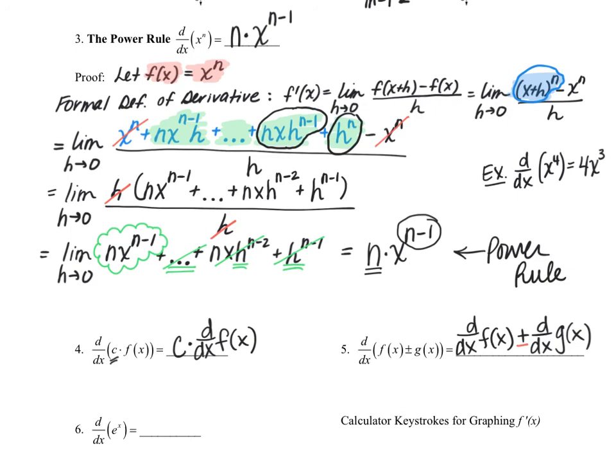For rule number six, the derivative of e to the x: rather than doing the formal proof here, we'll see in the next video that the derivative of e to the x is actually just e to the x. I'll show you calculator keystrokes to graph the derivative and confirm visually why the derivative of e to the x equals e to the x.